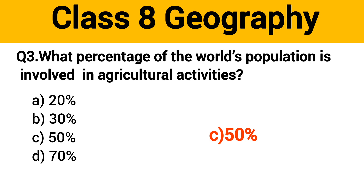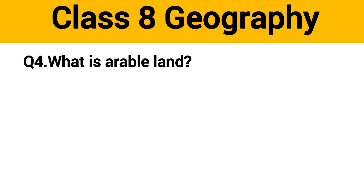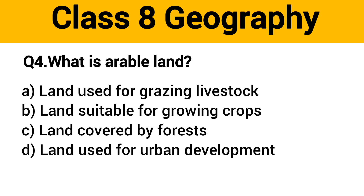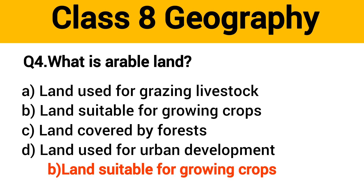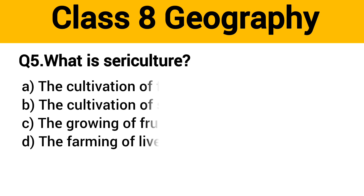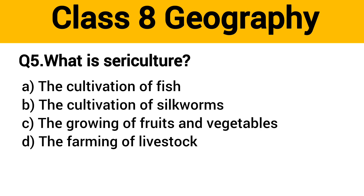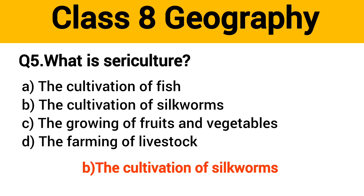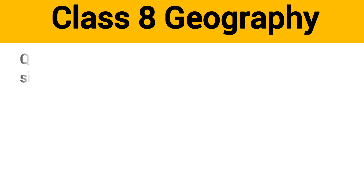Question number 3: What percentage of the world's population is involved in agricultural activities? The right answer is option C: 50%. Question number 4: What is arable land? The right answer is option B: land suitable for growing crops.